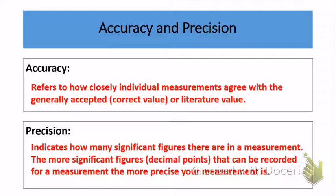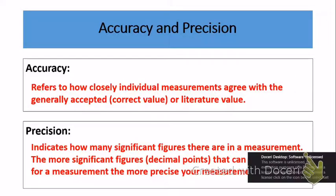Precision deals with the significant figures in the instrument that you use to record data. In every instrument there's always going to be some uncertainty or error. The more significant figures or decimal places that you can record your measurement to, the more precision you will have.